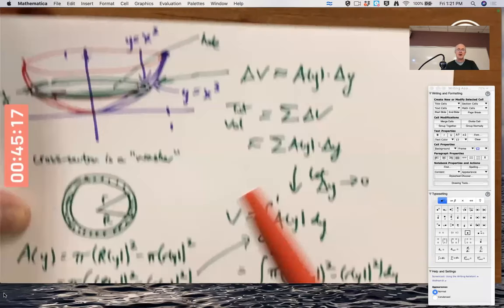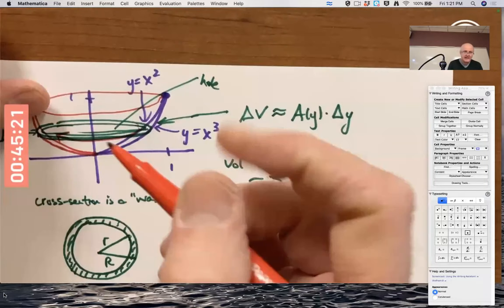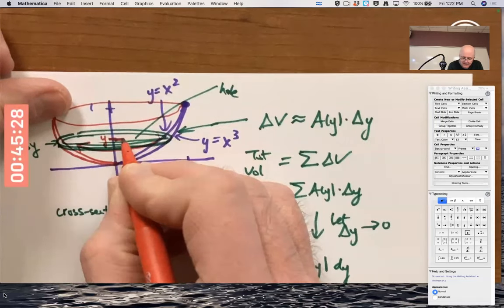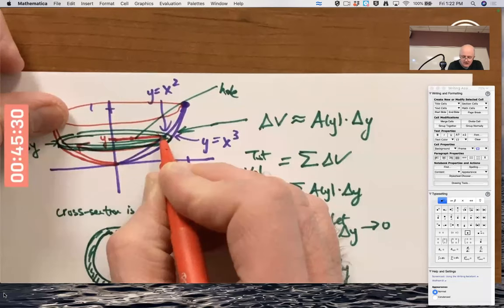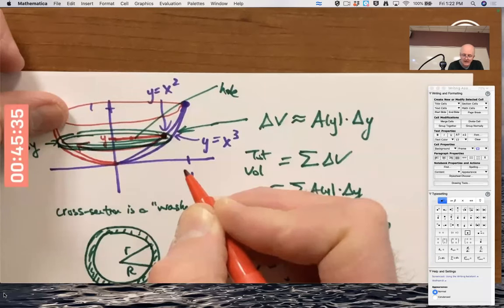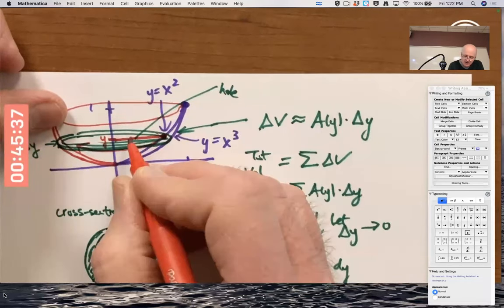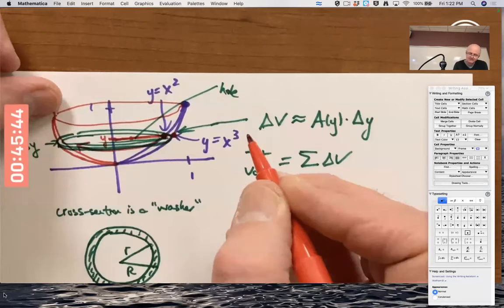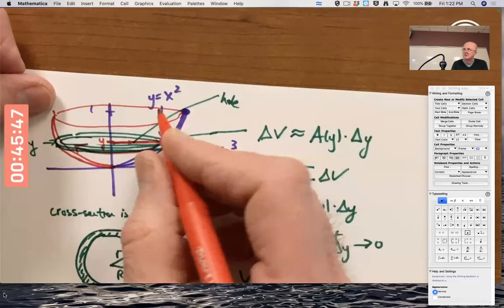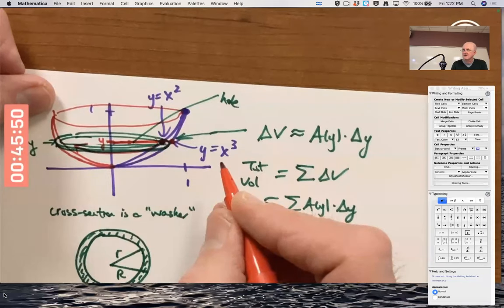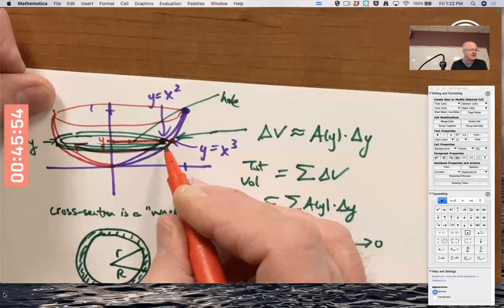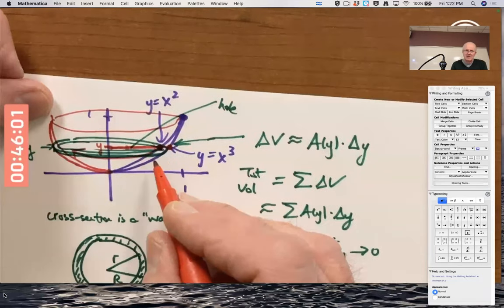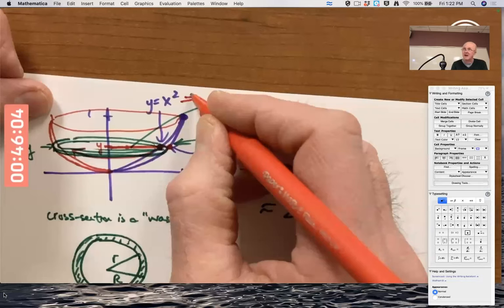What are capital R and little r? They are functions of y. In this three-dimensional picture, for a given value of y, like right there, little r is the horizontal distance from the y-axis to that point on the graph that's higher. And capital R is the same distance plus a little more to the other graph. But careful, those distances are not x squared and x cubed. Because x squared and x cubed are the second coordinates at that point, not the first coordinates.